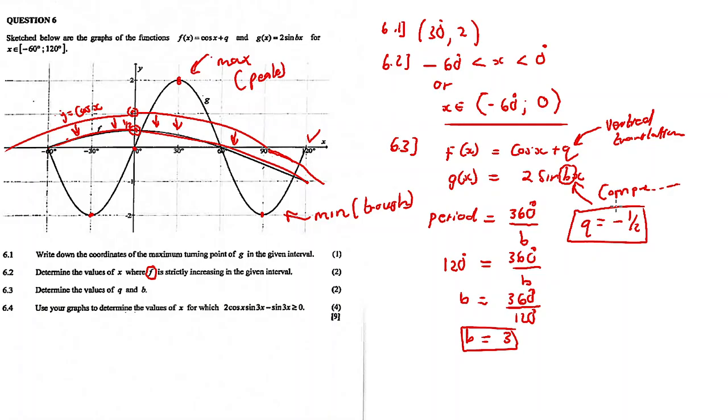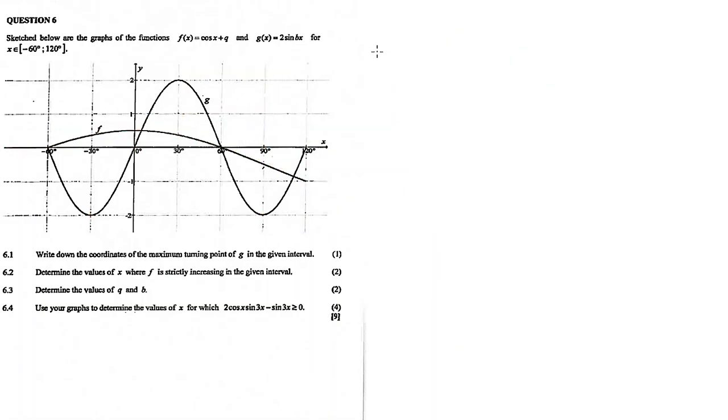Now for 6.4. 6.4. Use your graphs to determine the values of x for which 2cos(x) times sine(3x) minus sine(3x) is greater than or equal to zero. Determine the values for x where this equation is true.